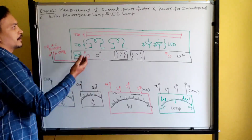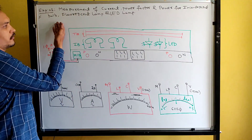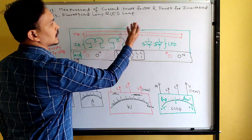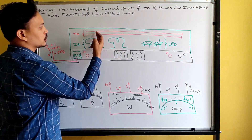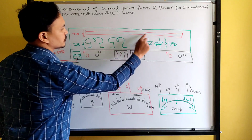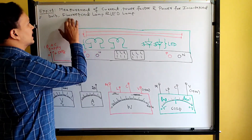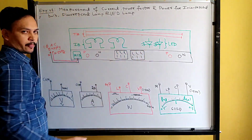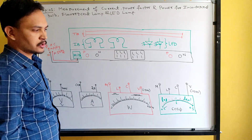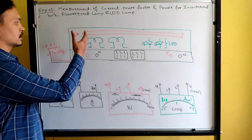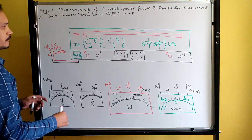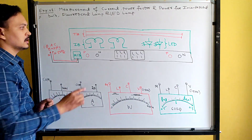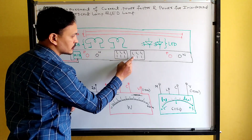In order to measure power and power factor of the following lamps, we obviously require those equipment and lamps. They have given us fluorescent lamps — we have taken two fluorescent lamps, also called tube lights — incandescent lamps, and two LED lamps. This entire lamp load bank consists of six lamps, each operated by individual switches.